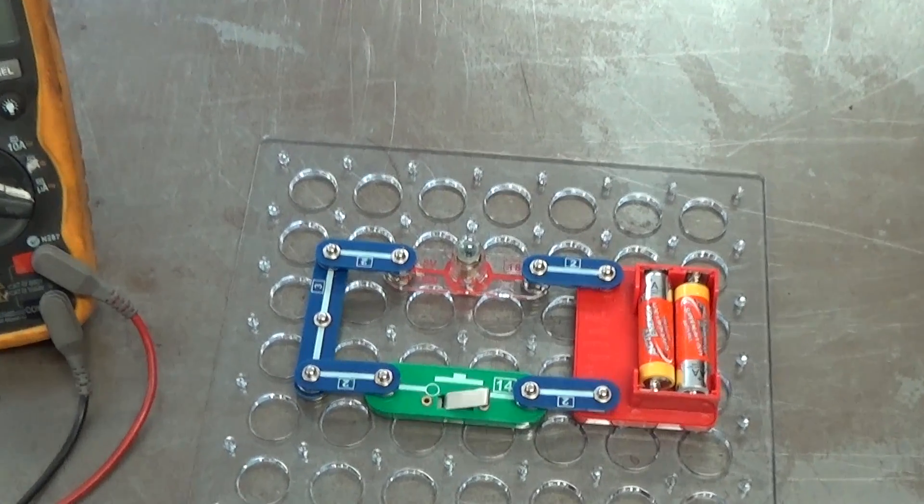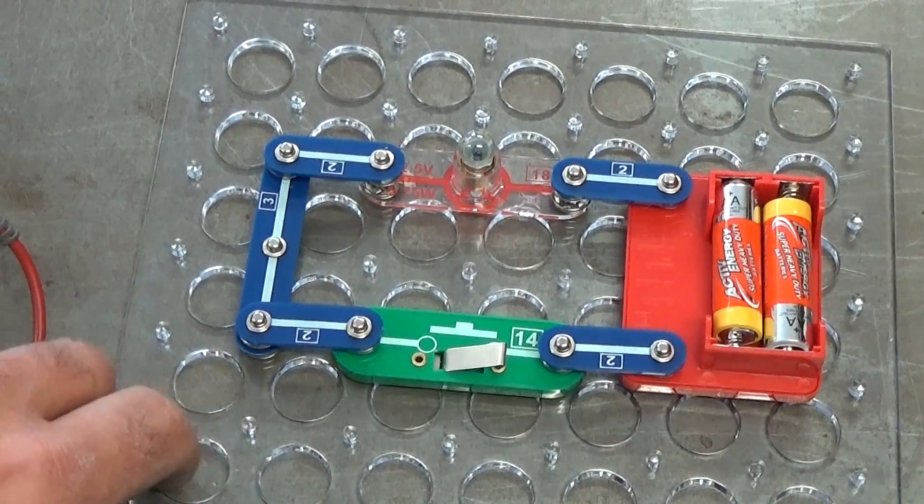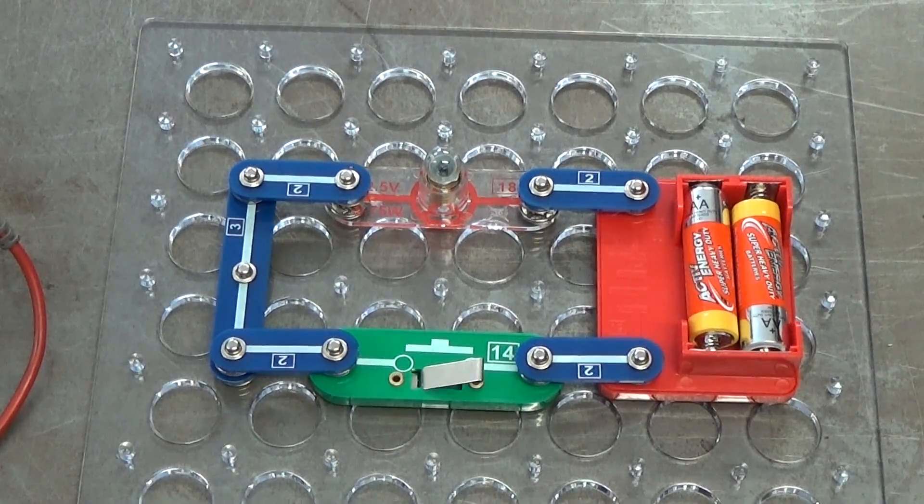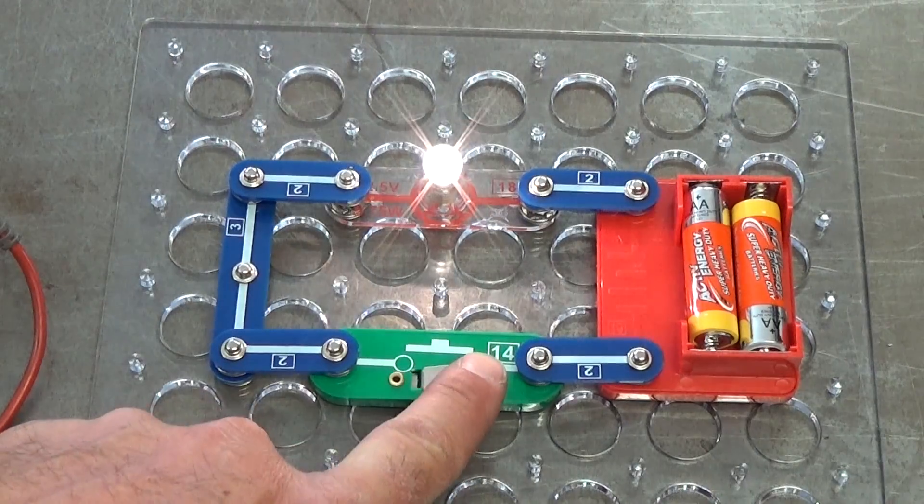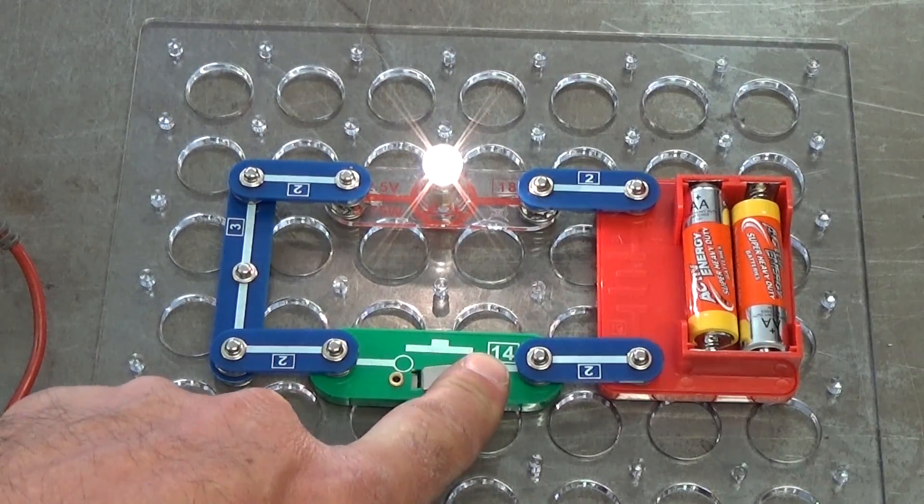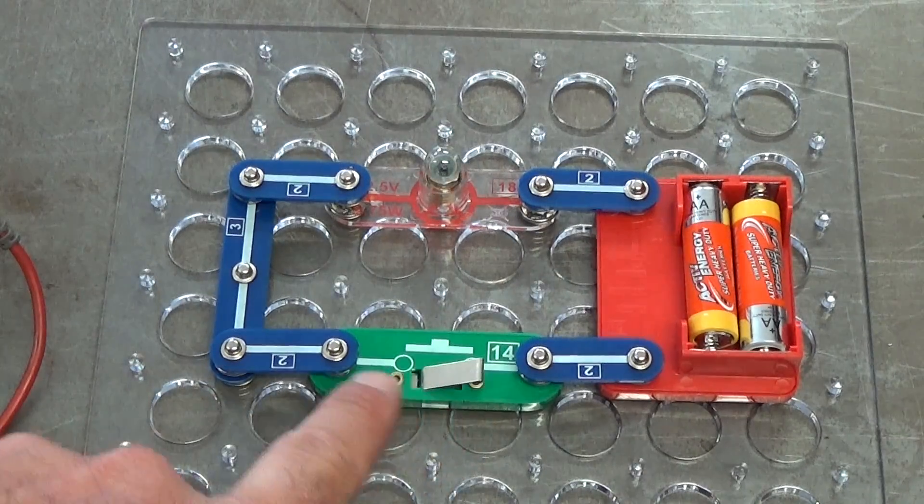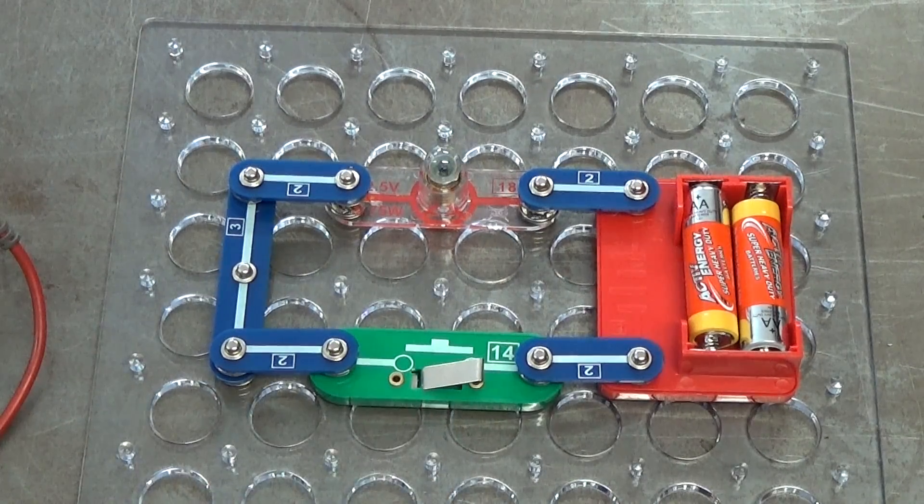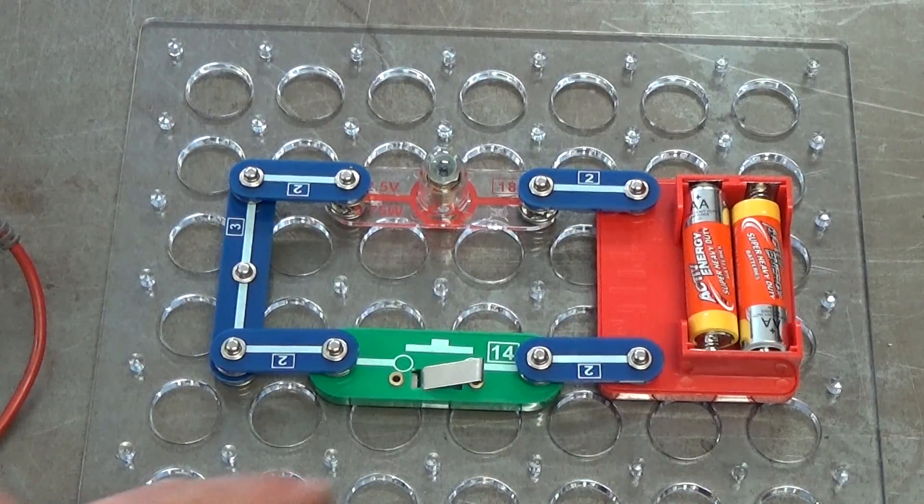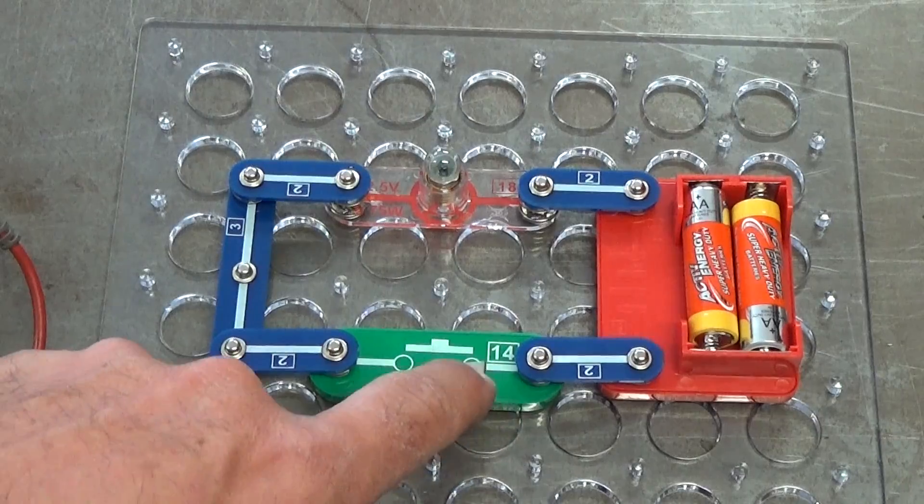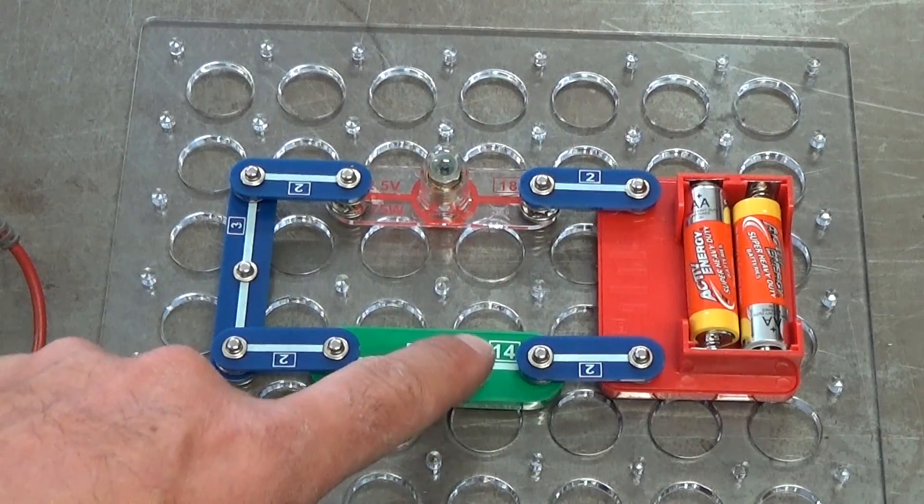You know, this could be similar to your indicator circuit or maybe a brake light circuit, where when you push down or close the circuit, you know, the globe lights up. And as soon as you release it, it breaks the circuit and the globe goes out. So, you know, similar to an indicator circuit really. So that's a momentary switch which is basically spring-loaded, so it'll spring open and break the circuit, and you've got to press it to close it.